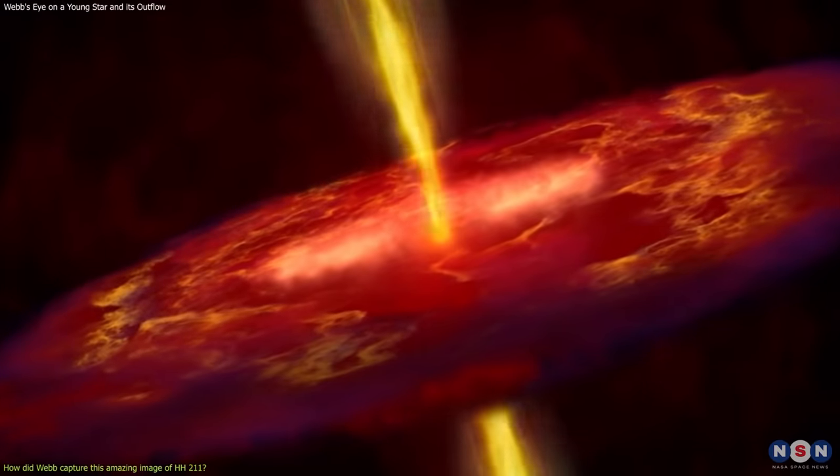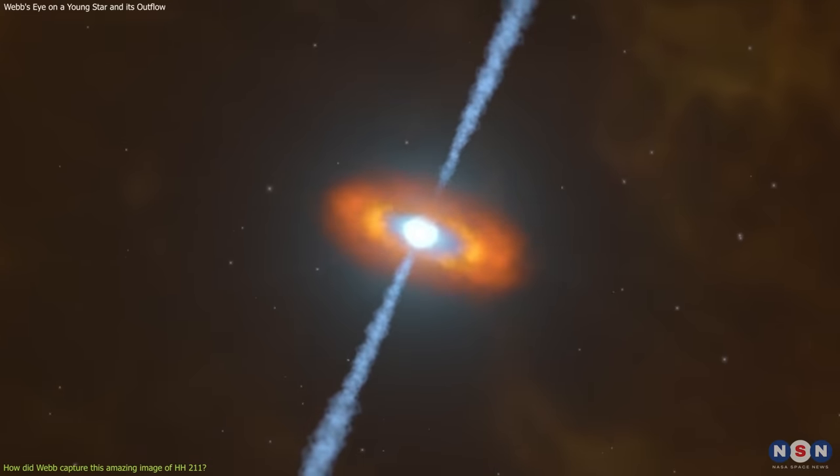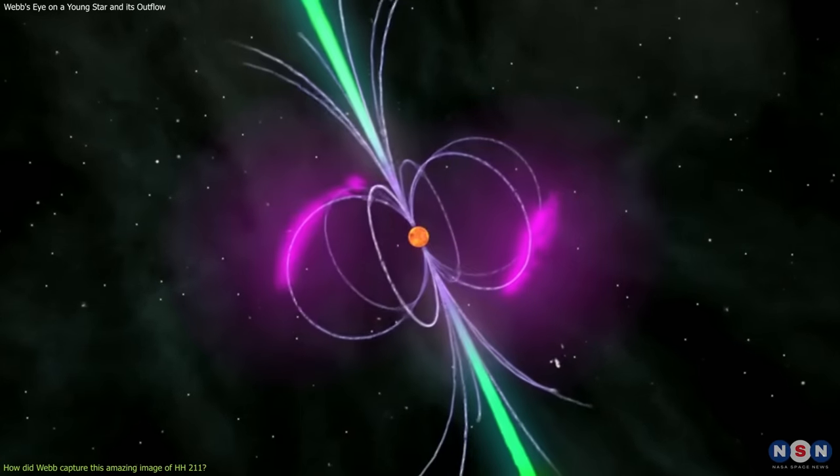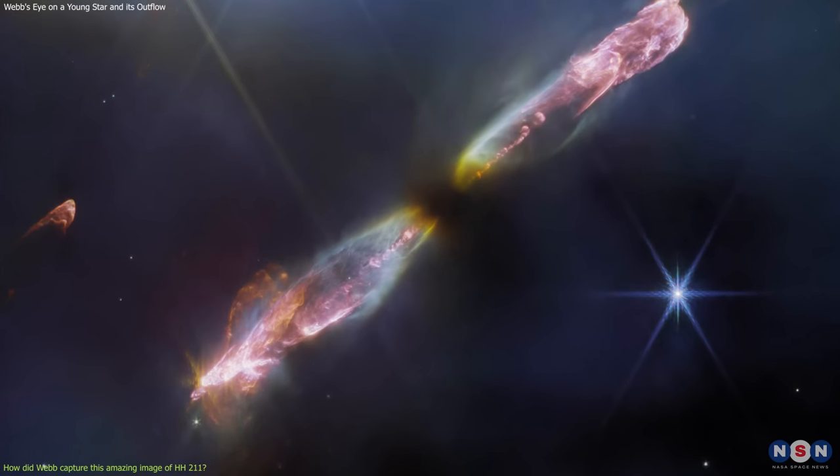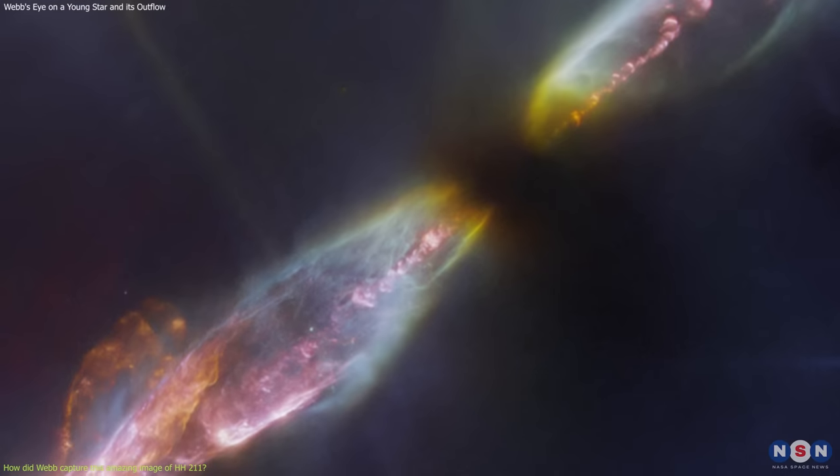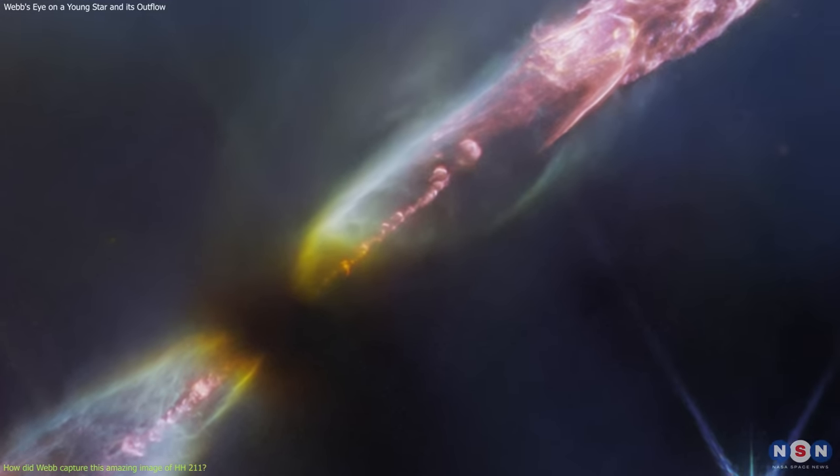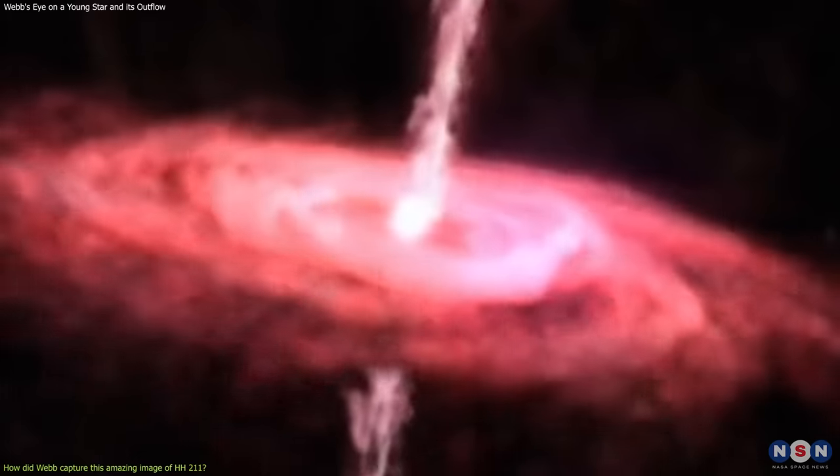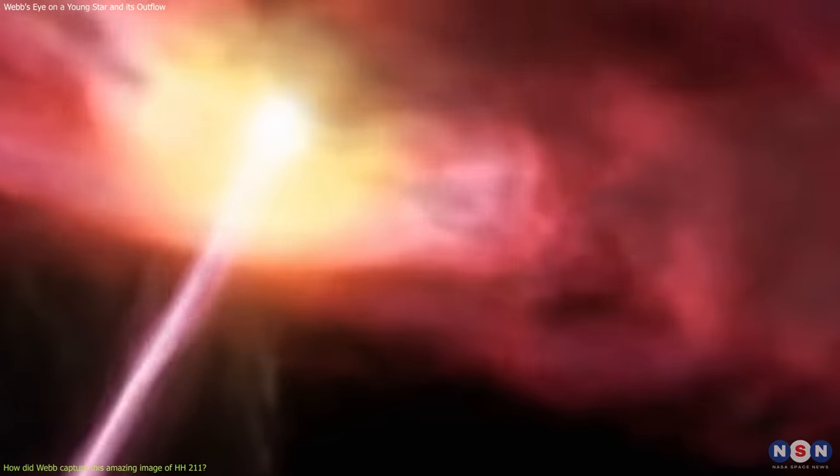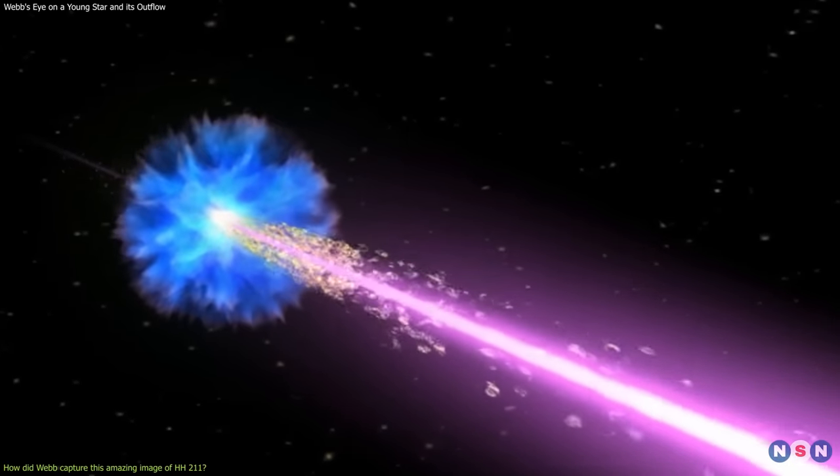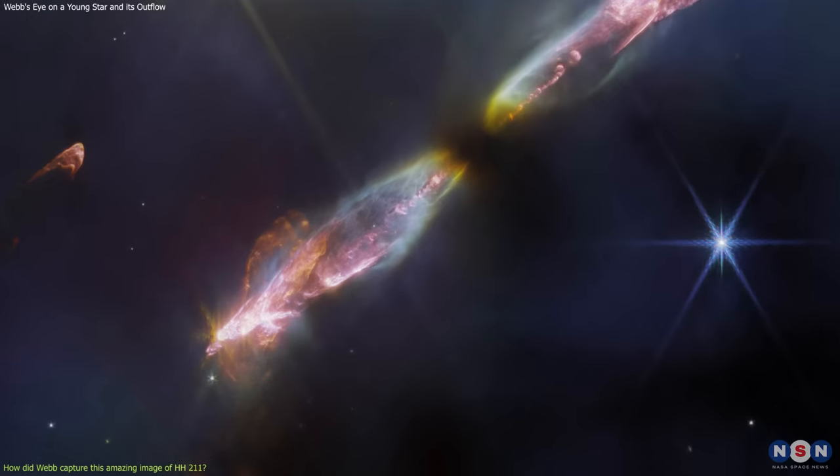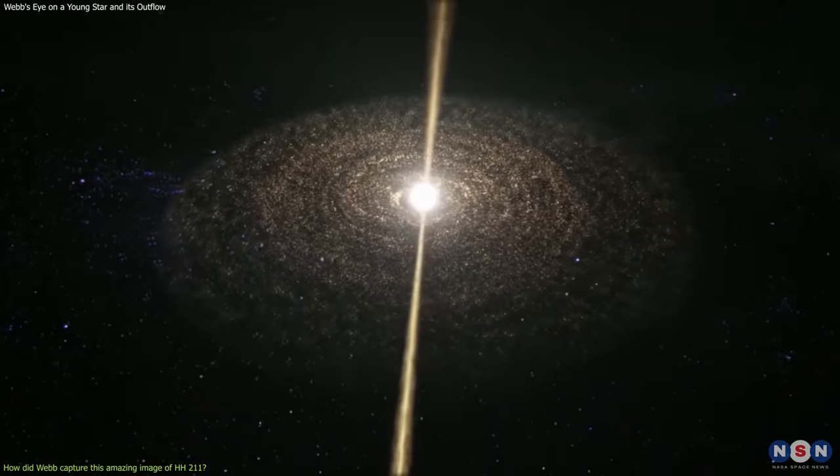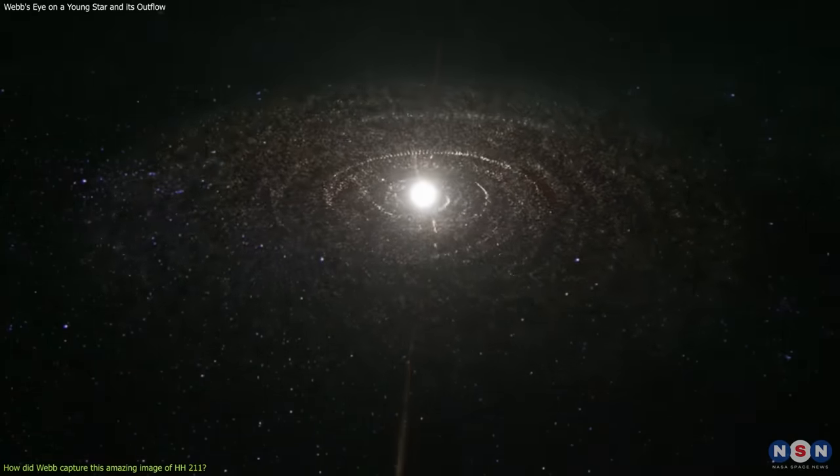A third finding is that the jet has a high degree of collimation, meaning that it does not spread out much as it travels away from the star. This suggests that the star has a strong magnetic field that confines and aligns the outflow. This may explain why the jet is so narrow and collimated, as well as why it has knots and clumps along its length. These findings are important for understanding how HH-211 forms and evolves over time. They show that the outflow plays a crucial role in regulating the growth of the star by removing excess angular momentum and energy from the disk. They also show that the outflow shapes its environment by creating cavities and bubbles in the molecular cloud. These cavities and bubbles may influence the formation of other stars and planets in the vicinity.